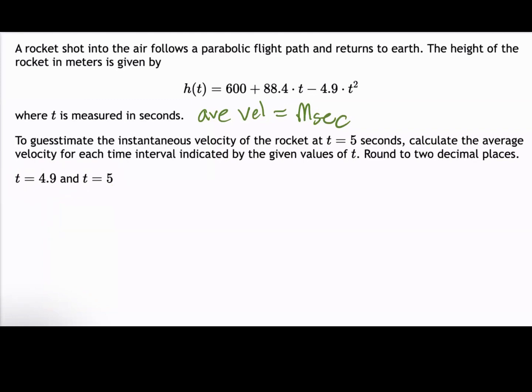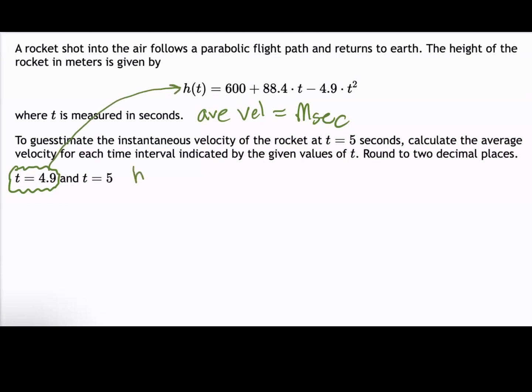So at t = 4.9 seconds, we find the point by plugging 4.9 into the given height function. So we have h(4.9) = 600 + 88.4 × 4.9 - 4.9 × 4.9². And this gives us h(4.9) = 915.511.